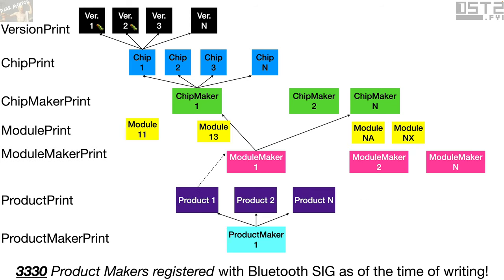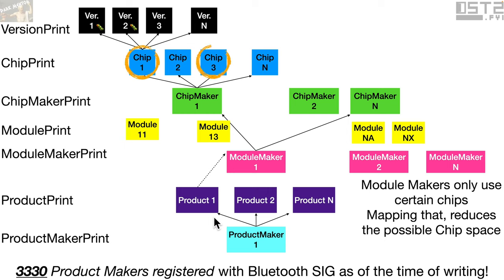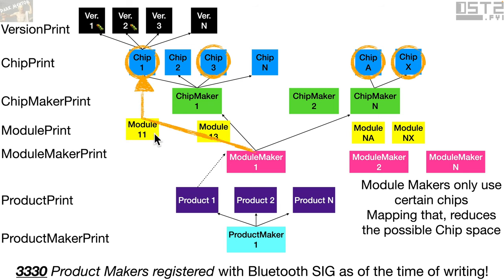To introduce even more complexity, there are many different modules for each module maker. We may find a relationship like: module maker one only ever uses chip one, chip three, and chip X. So if we can say something about which module is running — module 11 uses chip one, module 13 uses chip maker one chip three — determining these relationships allows us to down-select from the space of all Bluetooth chips from all silicon makers, to a subset that gets us closer to determining whether a device could be vulnerable to over-the-air exploits.